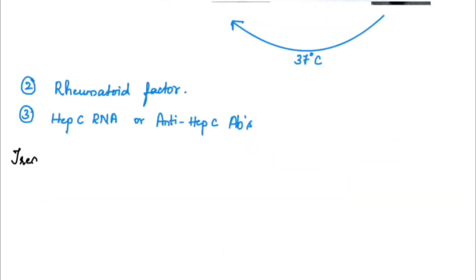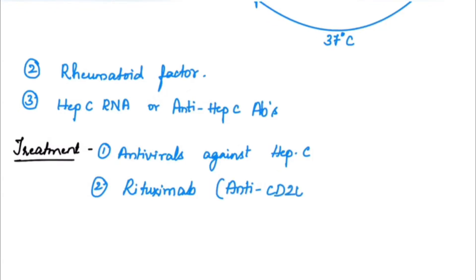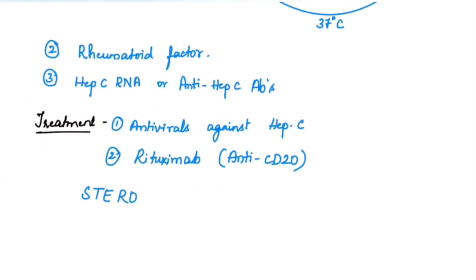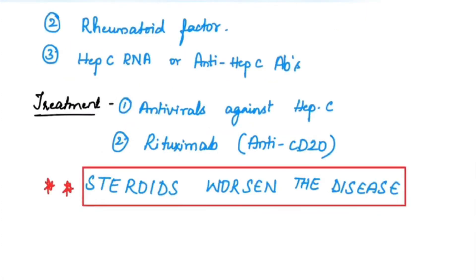Now we will look at the treatment. Antivirals against hepatitis C is the first mode of treatment, and rituximab, which is an anti-CD20 monoclonal antibody, is also approved for the treatment of cryoglobulinemic vasculitis. Importantly, steroids worsen the disease. Unlike many other rheumatological conditions, steroids cannot be used here because they have been shown to worsen the disease.